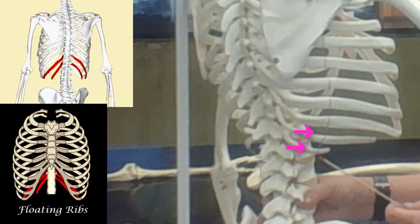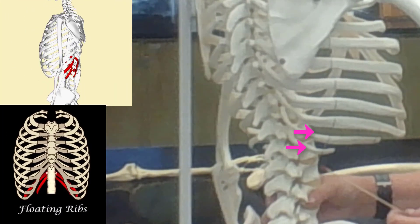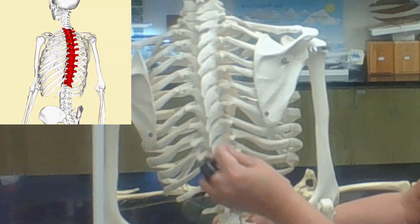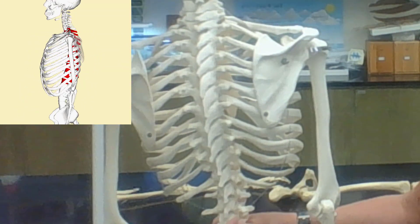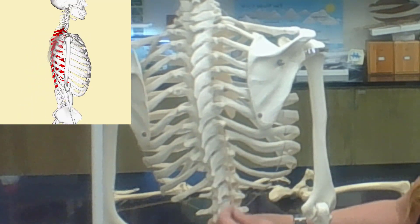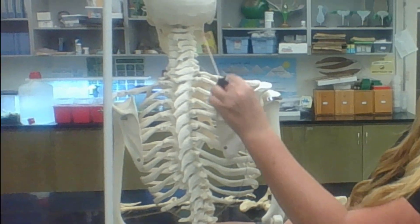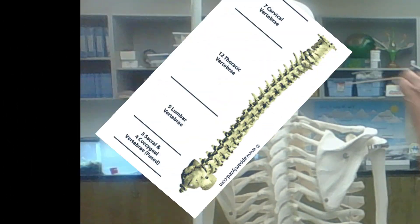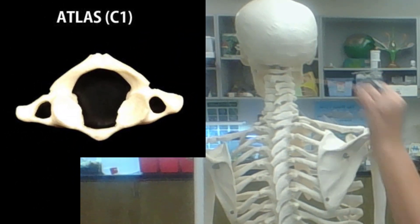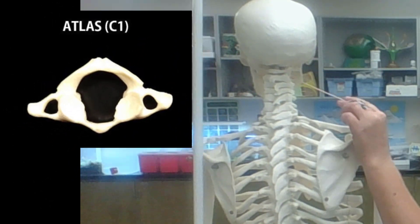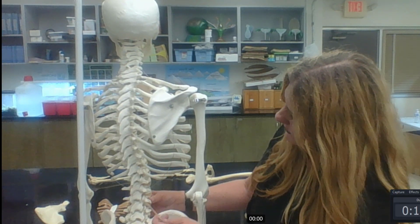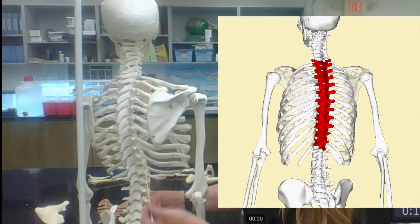There are also a couple of ribs that do not articulate with the sternum at all — these are considered floating ribs. The vertebrae that articulate with the ribs are the thoracic vertebrae. Here we have the cervical vertebrae, including C1 (the atlas) and C2 (the axis).